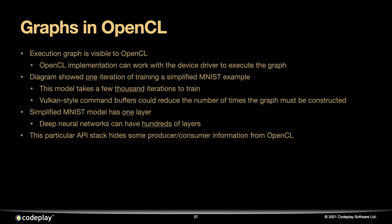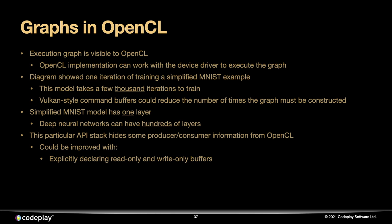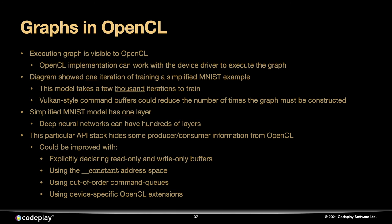I've pointed out that this particular API stack hides some information about buffer producers and consumers. There are a few ways to improve on this: one option is to explicitly declare buffers as read-only or write-only; it's also possible to place buffers into the constant address space in OpenCL; or to use out-of-order command queues, which allow the OpenCL implementation to make more liberal assumptions about reordering buffer accesses. Finally, some accelerator devices have specific features that OpenCL doesn't initially understand, so it's possible to create device-specific OpenCL extensions so OpenCL can understand what it's meant to do on a particular device.